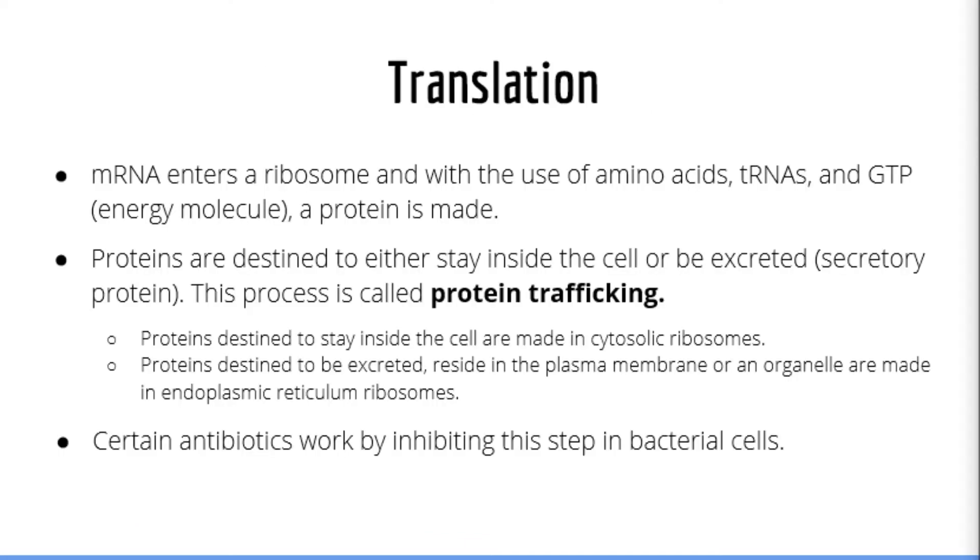Once inside a ribosome, the process of creating the protein from amino acid monomers can begin. It is important to realize that proteins which are destined to stay in the cytosol of the cell will be made using cytosolic ribosomes which are basically free-floating ribosomes. On the other hand, proteins destined to be excreted or reside in the plasma membrane or other membrane-bound organelle will be made in endoplasmic reticulum ribosomes. This is because the endoplasmic reticulum serves as the starting point for the mechanism which cells use to send proteins and other large molecules across the plasma membrane.